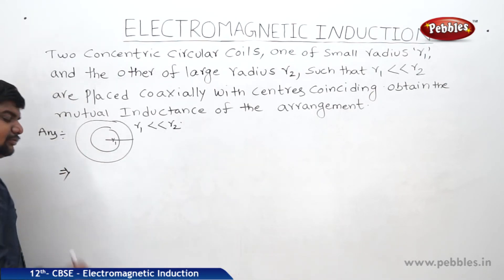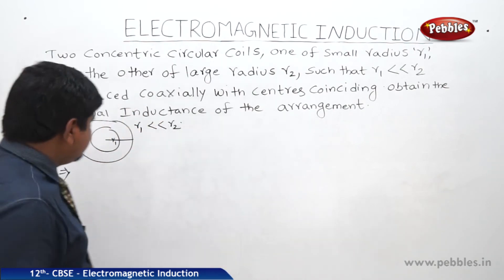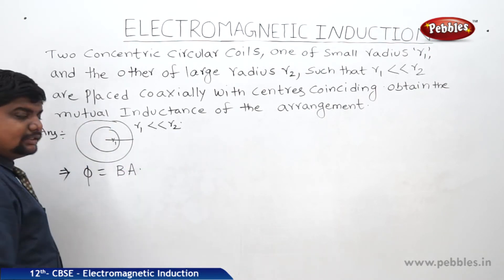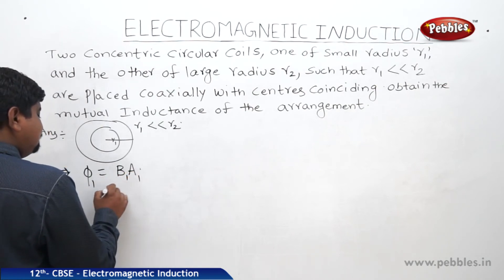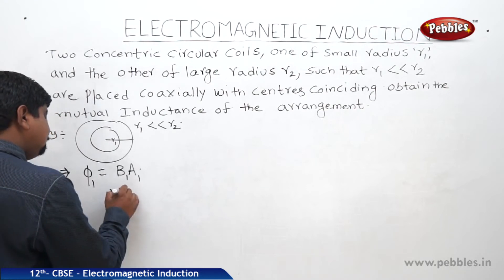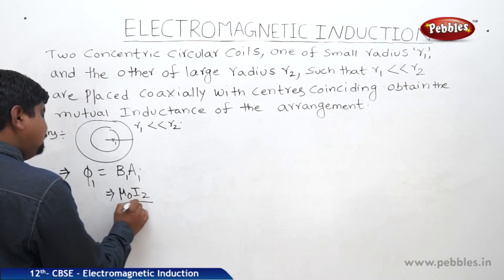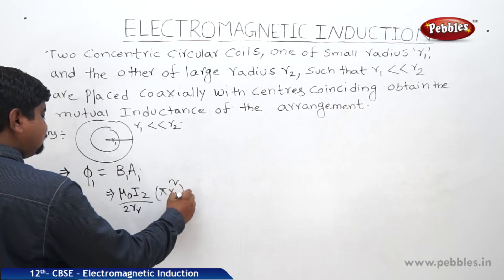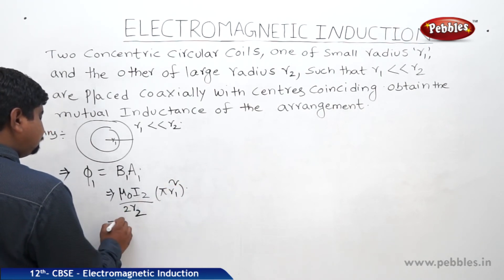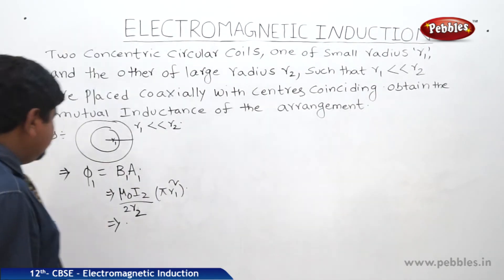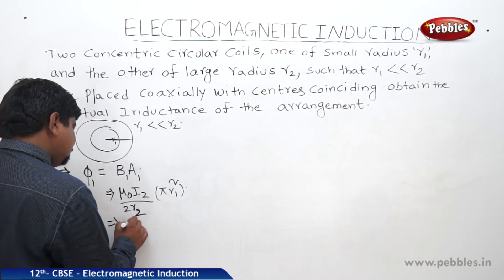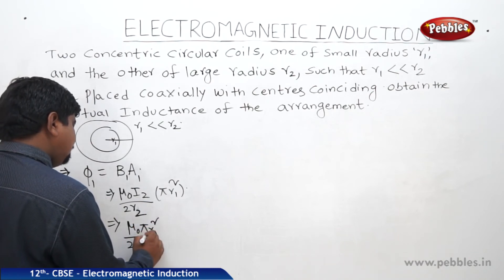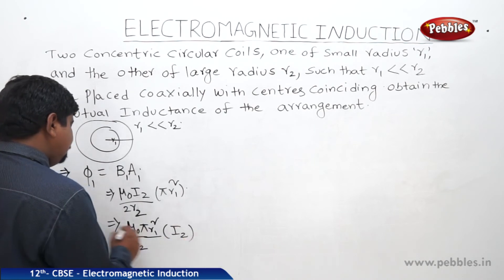Now two coils, mutual inductance means maybe M12 or M21. We can write like this. What is the flux? We know that BA. Phi 1 is equal to B1 A1. What is B1? Mu 0 pi 2 R2 into pi R1 square into I2. This is the flux equation.